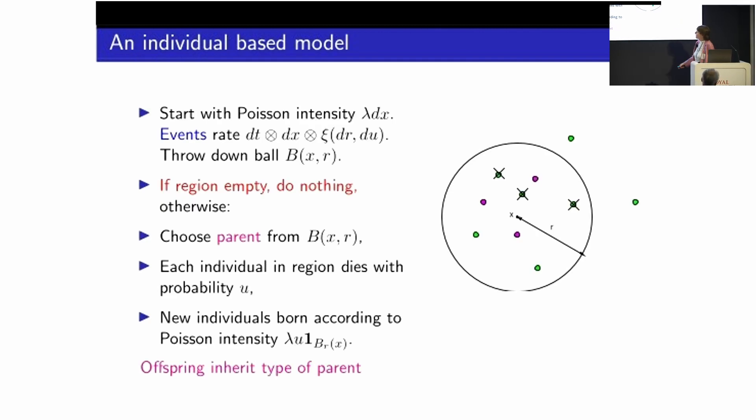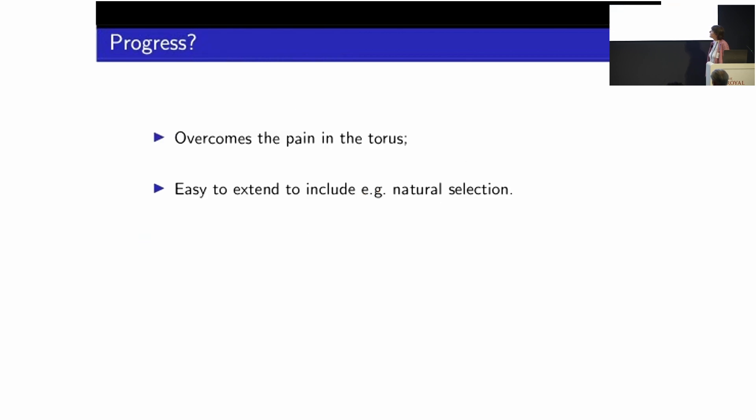And what do we do when that happens? Well, if when an event happens, there's no individual living in the region that's specified, we don't do anything. But if there is someone in there, then we choose a parent uniformly at random from the individuals living there. And notice that my reproductive success, if I'm living in a crowded region, is low because my chance of being picked as a parent is small. On the other hand, if I'm living in the middle of the Utah desert and there's no one else there, I'm in clover. I'm going to be the parent. So this introduces a regulation of the population. So we choose our parent. I've colored it in magenta. And then each individual in the region dies with some probability. And we throw down offspring. But the number of offspring we throw down doesn't depend how many individuals are in the region. And we throw them down independently at random within the region, and they inherit the type of the parent.